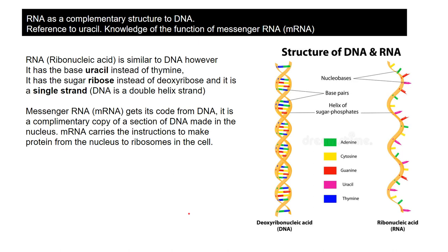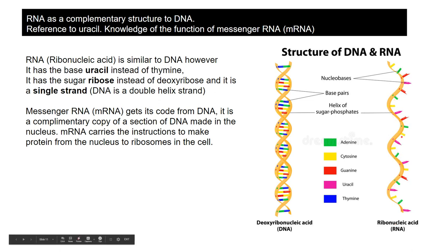Now quickly to look at RNA. RNA is a similar molecule to DNA - it's made up of nucleotides joined together in a long sequence. However, there are three significant differences: RNA has the base uracil instead of thymine; it has a sugar ribose instead of deoxyribose; and RNA is a single strand, whereas DNA is a double strand. The RNA molecule has uracil - those pink bases - instead of thymine.